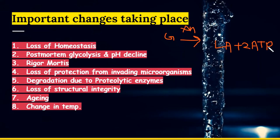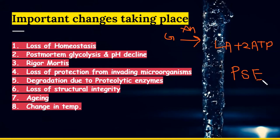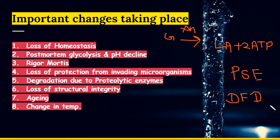In the pH decline condition, muscles exhibit pale, soft, and exudative — called PSE — condition. The muscle of the animal depicts a pale color, becomes soft and exudative. In high pH condition, DFD condition takes place — D means dark, F means firm, and D means dry. Normal conditions have pH ranging around 5.5 to 5.7.